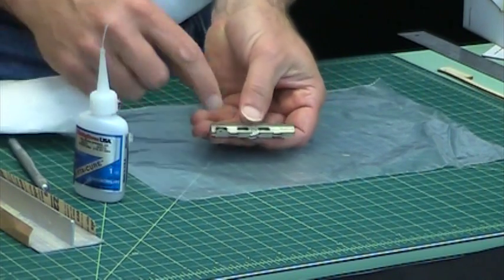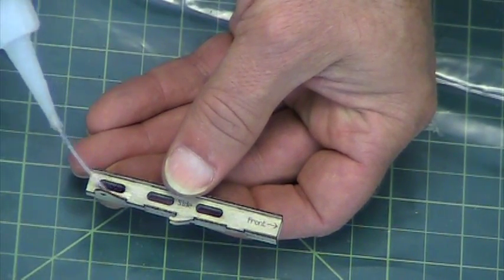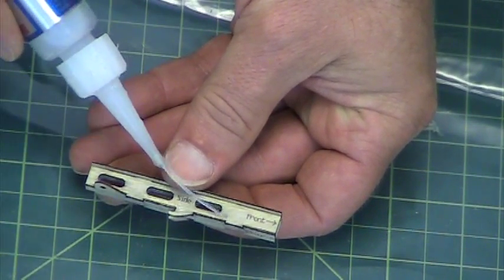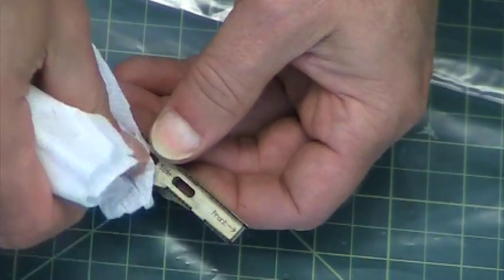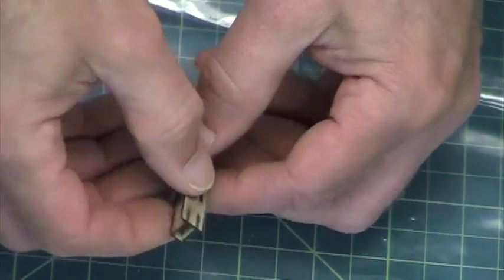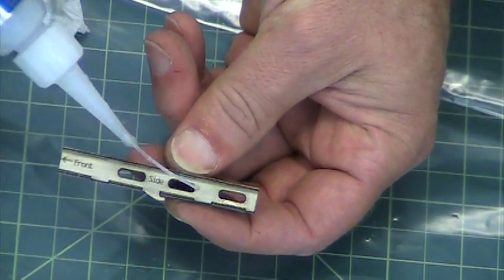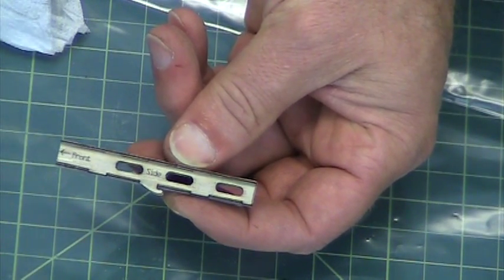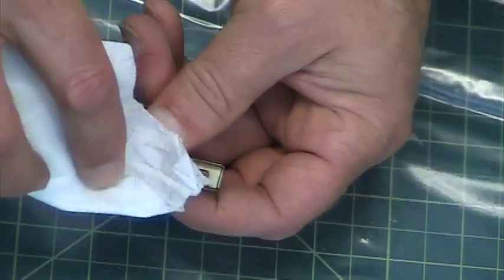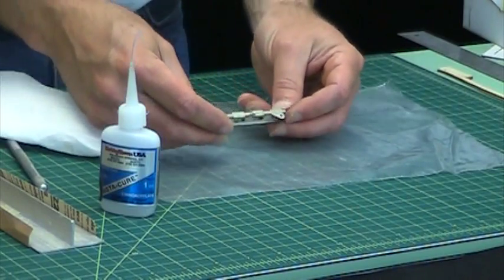And now we're going to do the tabs on the side. So here's a tab here. There. There. There. There. And flip it over. There. There. There. There. And there. There. Okay.